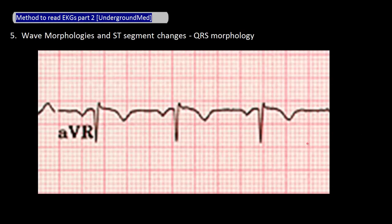Let's look at this EKG for Q waves. Look at this — a nice Q wave in AVR. What do you think about this Q wave? Remember, AVR is a special lead and in general not very useful. Its direction is opposite all the other leads, so what looks like a Q wave here is actually just a flipped R wave.